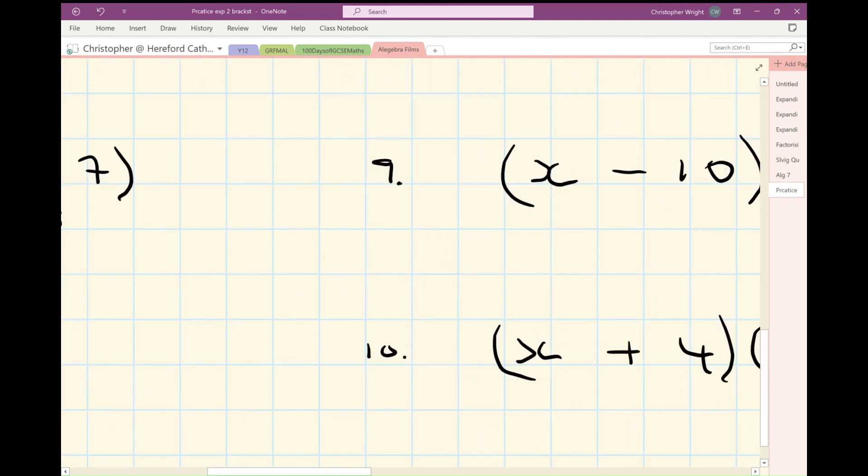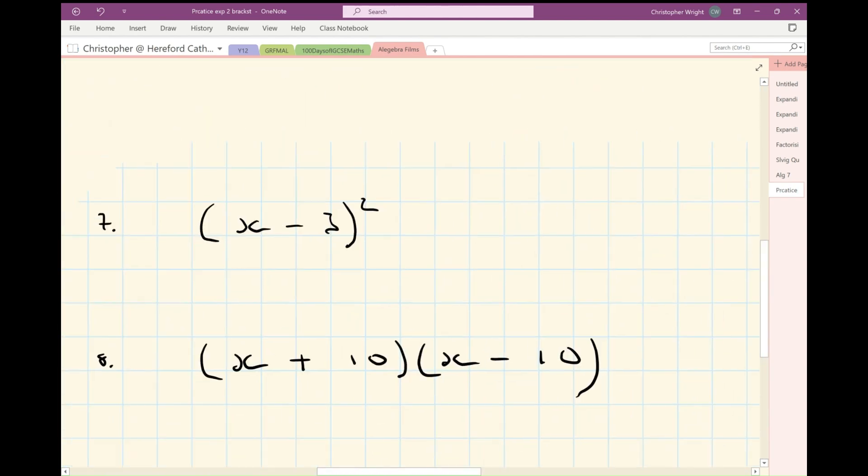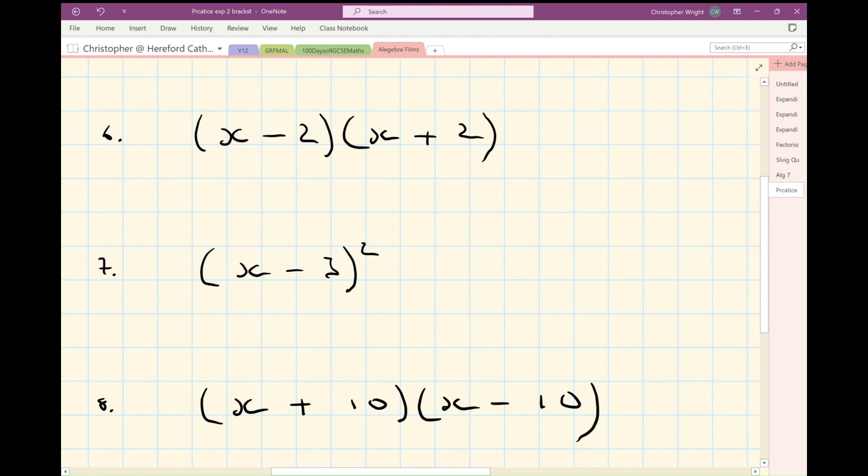Number six. Now, this one is going to be middle term thief, isn't it? Because I get minus two x's from the nose and plus two x's from the mouth. So it's just x squared minus two times plus two is minus four.